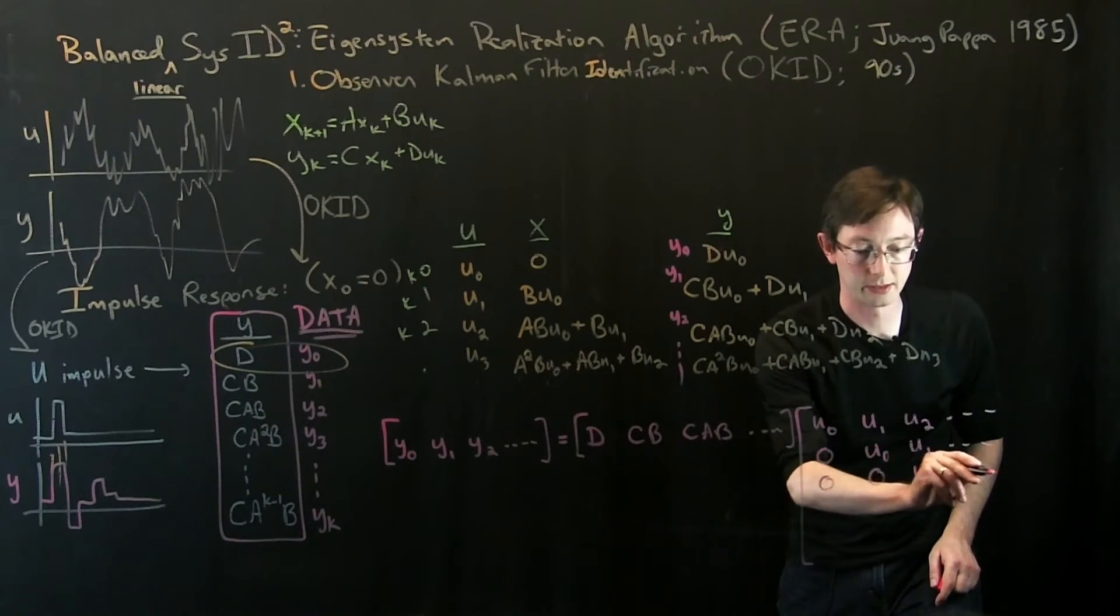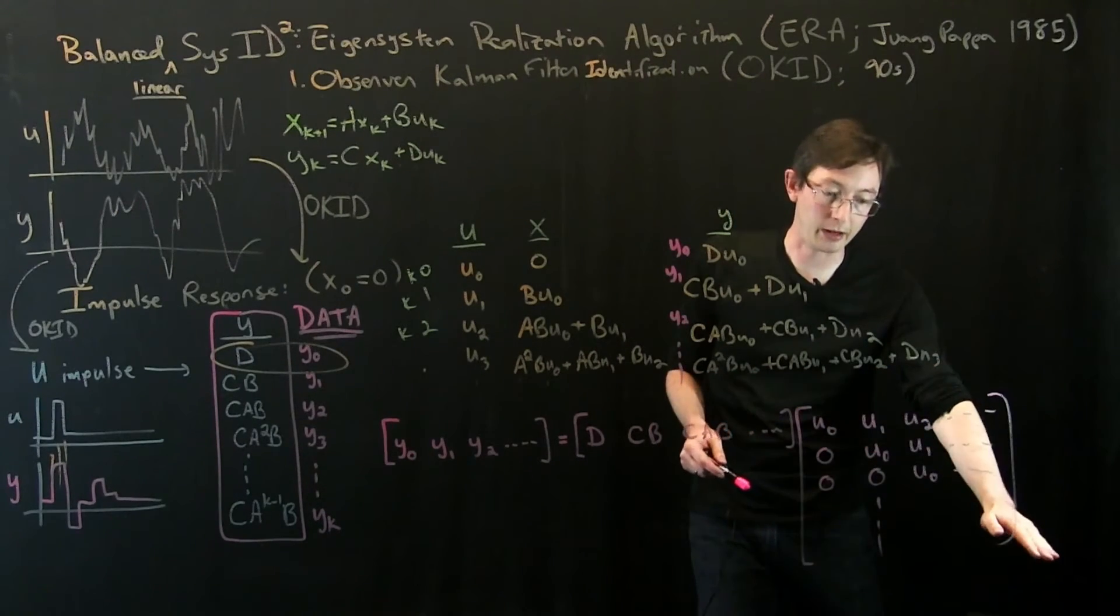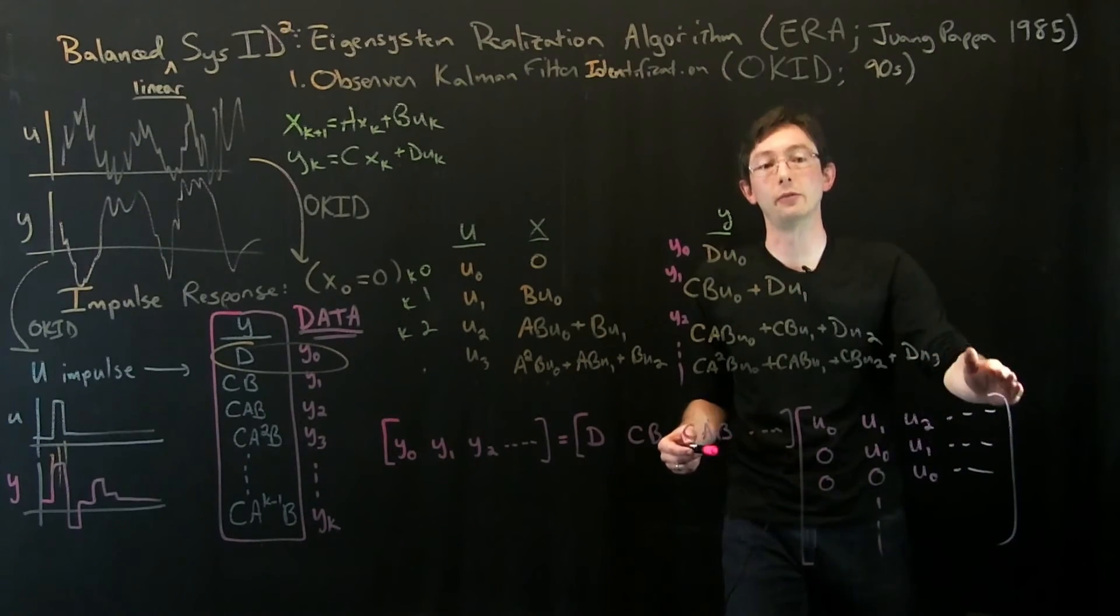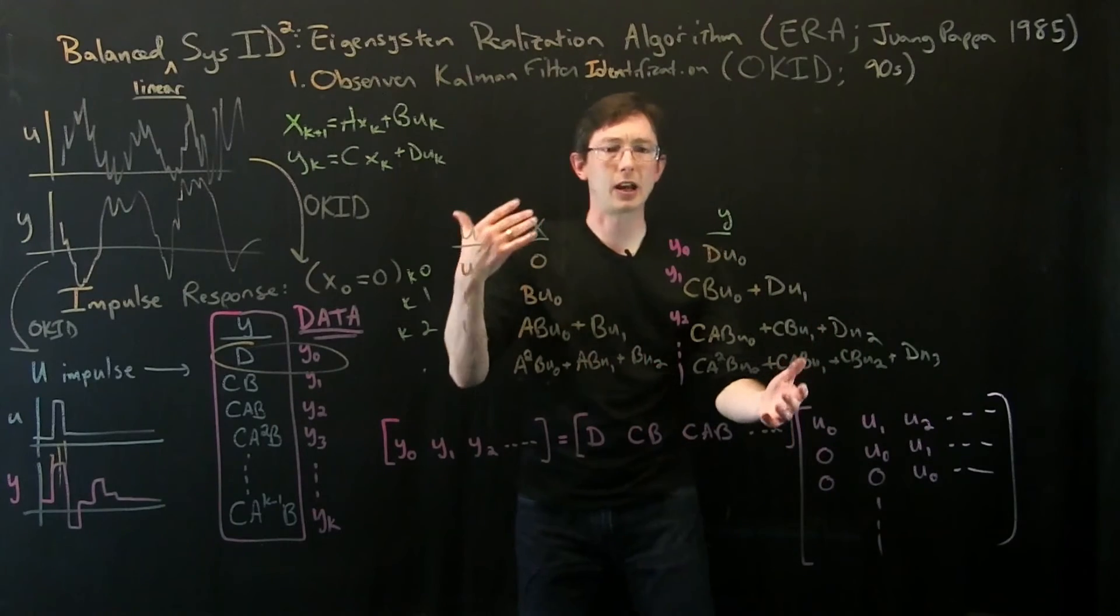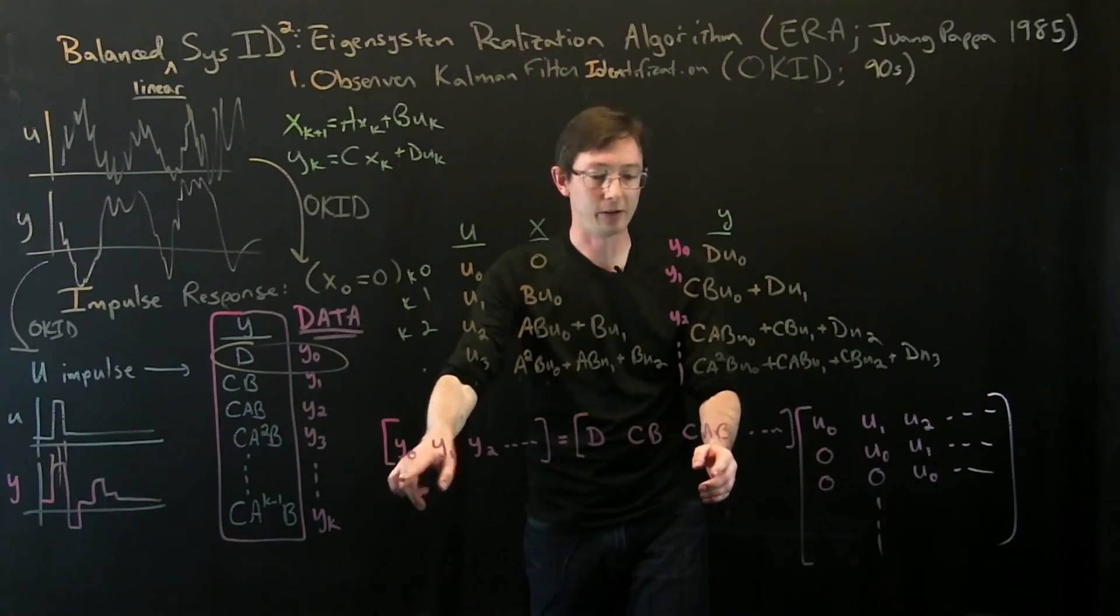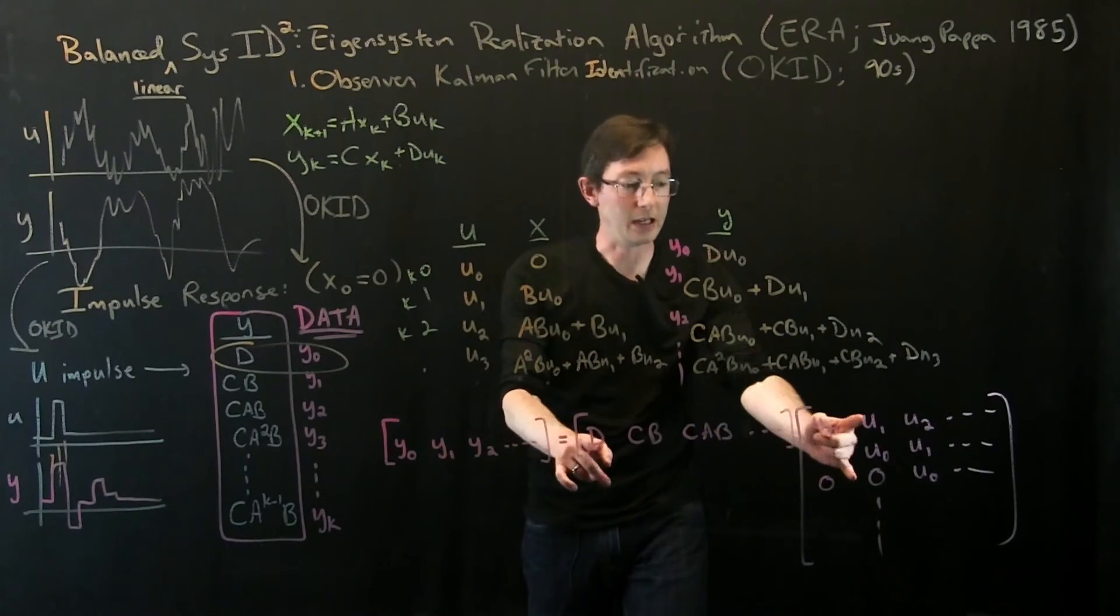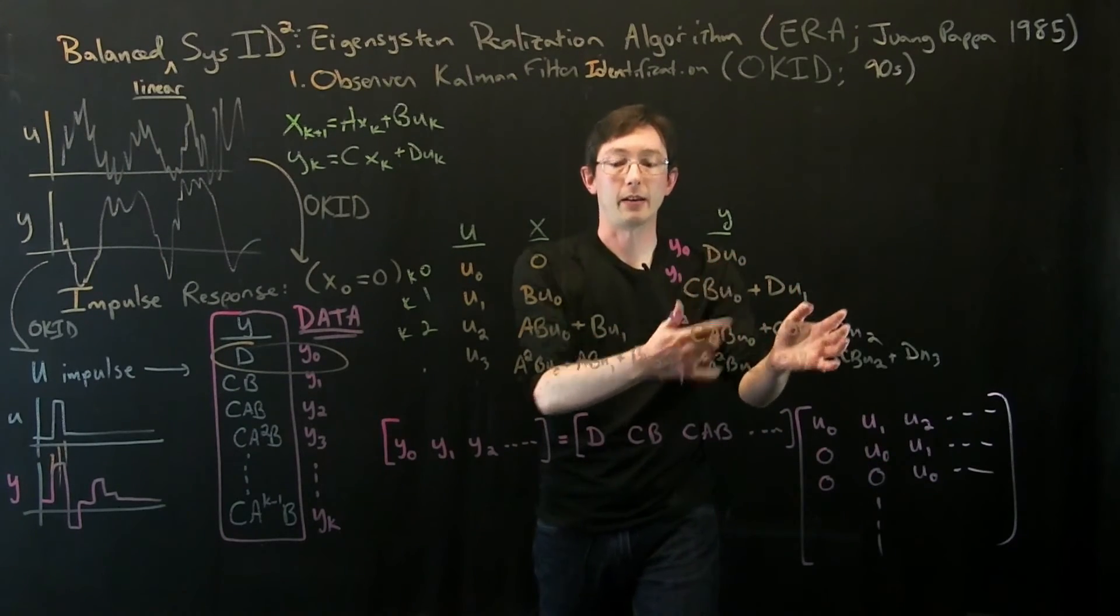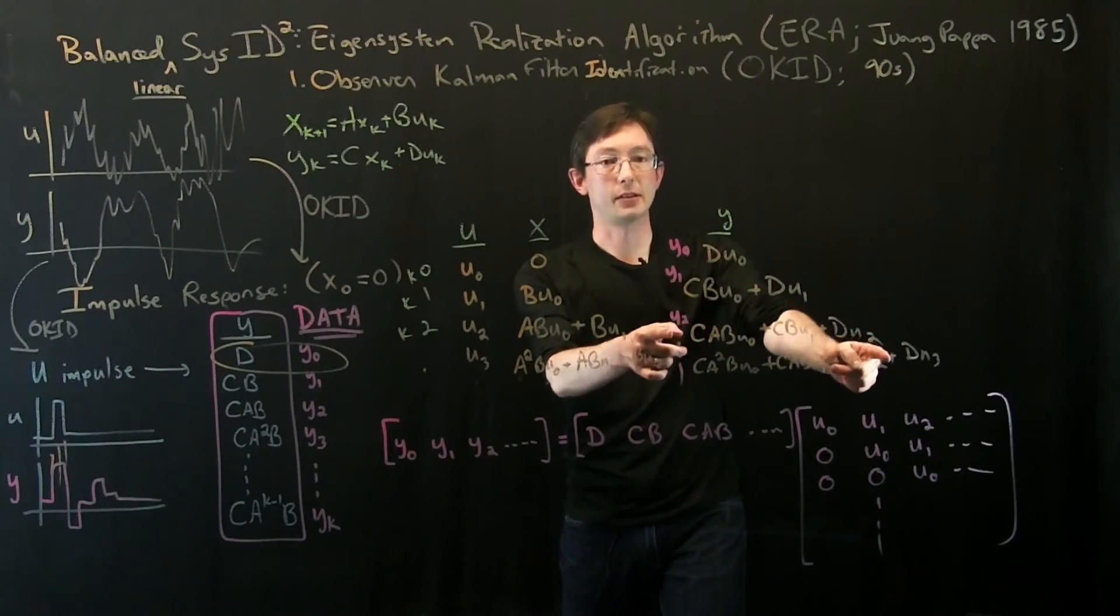Of u_0, u_1, u_2 dot dot dot, zero u_0, u_1 dot dot dot, zero zero, you get the picture dot dot dot. So this is kind of upper triangular matrix of all of my u's. u_0 on the diagonal, u_1 on the next diagonal, u_2 on the next one, u_3, u_4, u_5. And the idea is if I multiply this out, let's just kind of do this example. So y_0 equals D times u_0, check. y_1 equals D times u_1 plus CB times u_0, check. y_3 equals these three terms times those three terms, check.